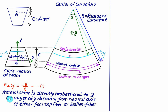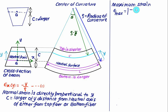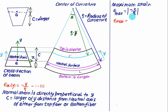Substituting Y equals C gives the maximum value of normal strain. We define epsilon_max as the absolute value of epsilon_x(Y), which equals the absolute value of minus C divided by rho. This is equation 2: |epsilon_max| equals C divided by rho.